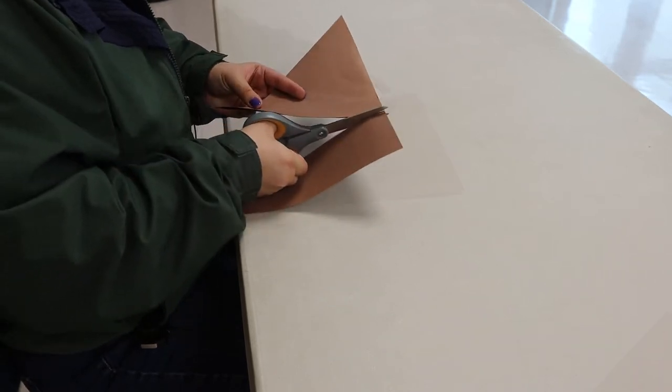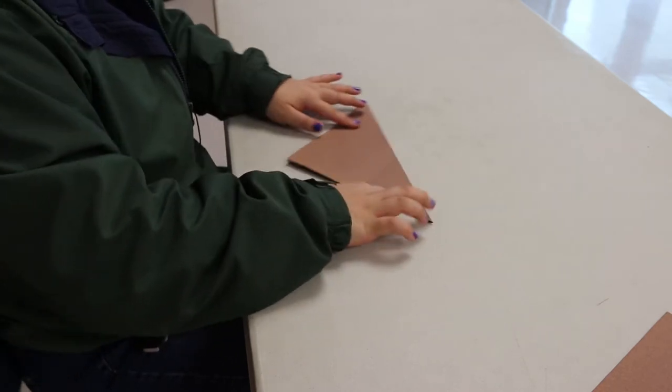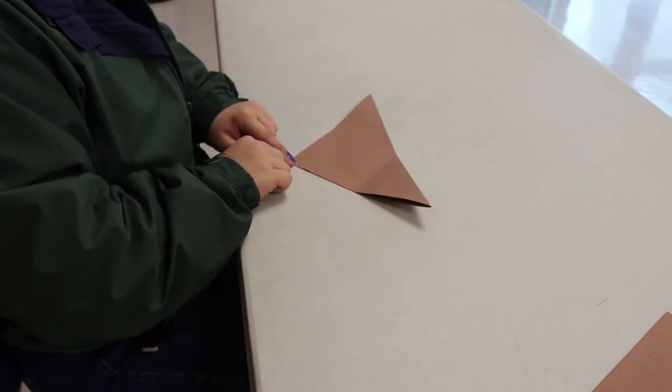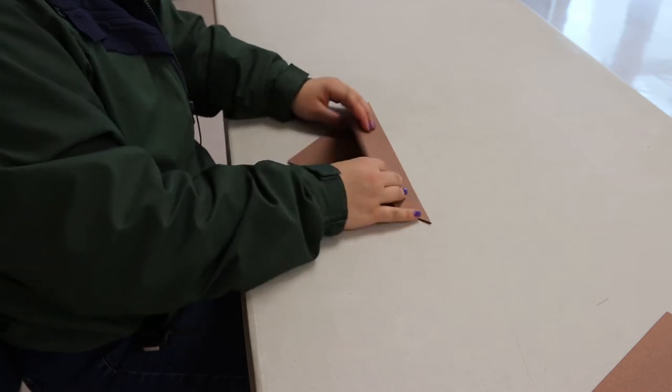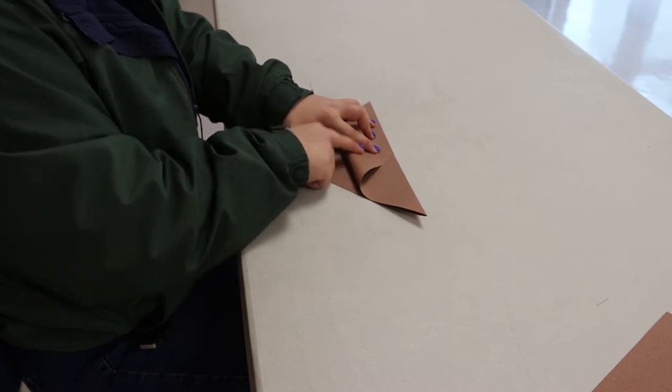Now with our brown square we're going to fold from corner to corner, crease it, and now you're left with the triangle. You're going to take this bottom open flap and fold it up till it meets the top, and we're going to crease this down.